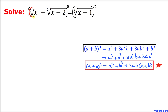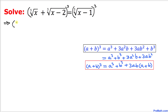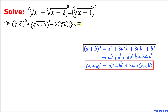I'm going to call the first part 'a' and the second part 'b', and apply the formula. The left hand side becomes: (cube root of x)³ plus (cube root of x minus 2)³ plus 3 times (cube root of x) times (cube root of x minus 2), all in a bracket with (cube root of x plus cube root of x minus 2). On the right side, the cube and cube root undo each other, giving us x minus 1.